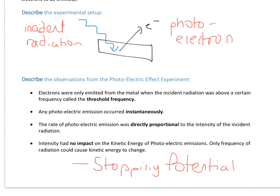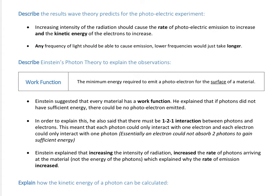Those are the four observations made from this experiment. Now I'm going to talk about the issues that created for the wave theory of light. Wave theory predicts something different - when dealing with waves, if you increase the intensity, you should increase the rate of photoelectric emissions, which is fine because that's what they saw. But it should also increase the kinetic energy of the electron - if you're delivering more energy, the electron should have higher energy if it's a wave. They also said that any frequency of light should be able to cause emission, because the electron can just keep absorbing energy and when it gets enough it should escape. But that was not seen in this experiment, which is why they needed a new theory.